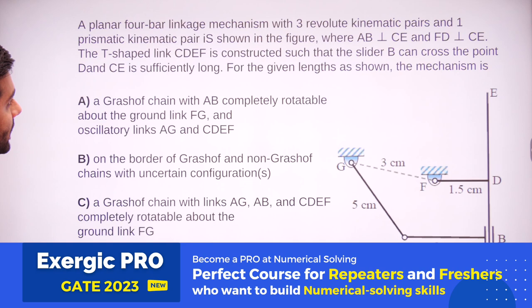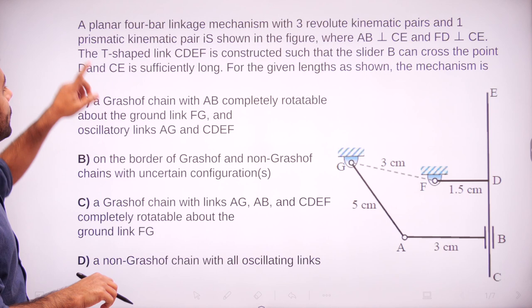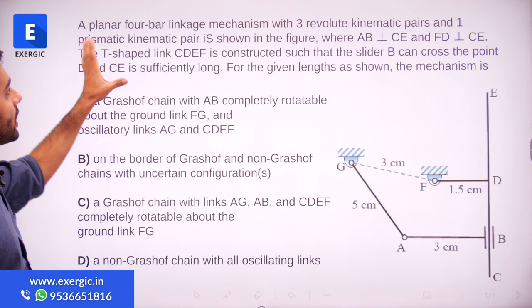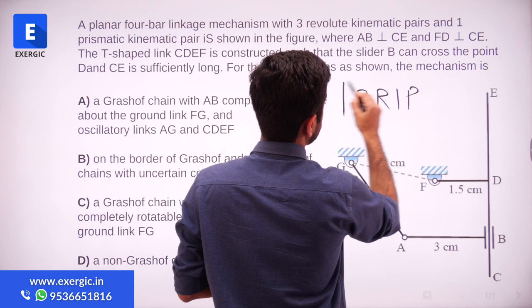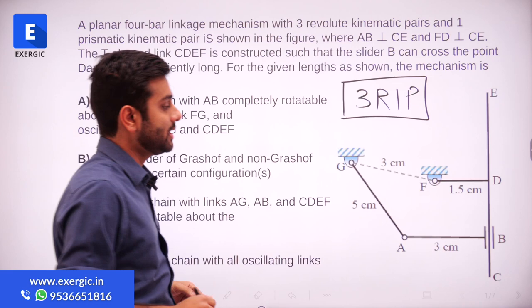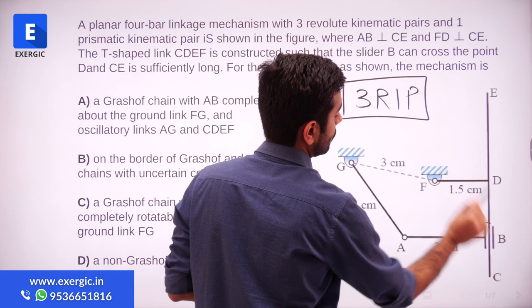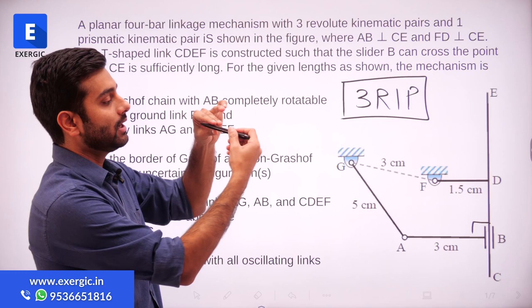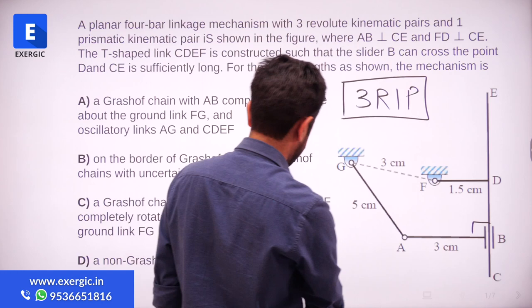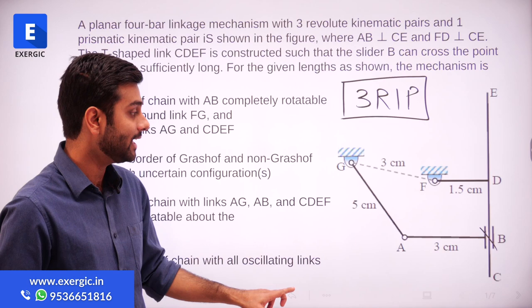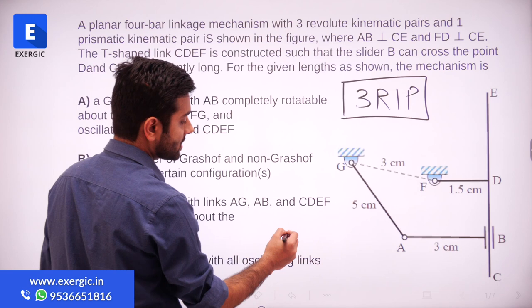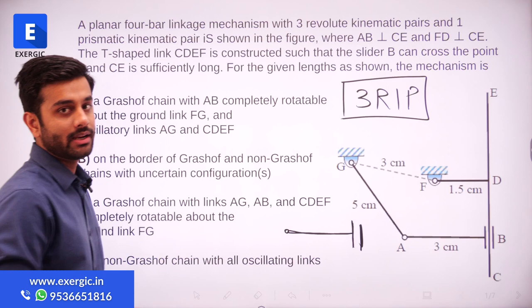A planar 4-bar linkage mechanism with 3 revolute kinematic pairs and 1 prismatic kinematic pair is shown in the figure. It has clearly mentioned that it is a 3R1P pair. AB is perpendicular to CE — this is AB and this is CE, they are perpendicular. Basically at B, you have a slot available where it can slide. The angle between A and B cannot change — B cannot rotate about A. This slot cannot change its orientation, meaning B cannot change its orientation about A, so AB will always be perpendicular to CE.